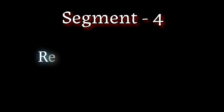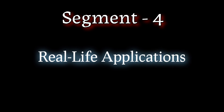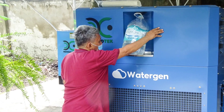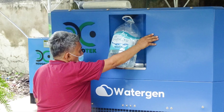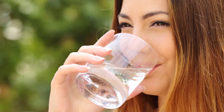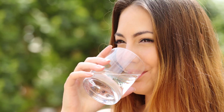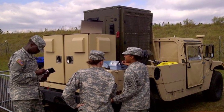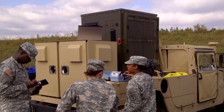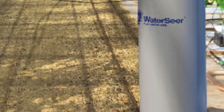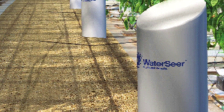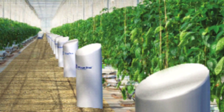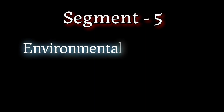The applications of atmospheric water generators are truly remarkable. From providing clean drinking water in remote villages to supplying water to disaster relief efforts, these machines are changing lives. They can also be used in greenhouses to maintain optimal humidity levels for plant growth.